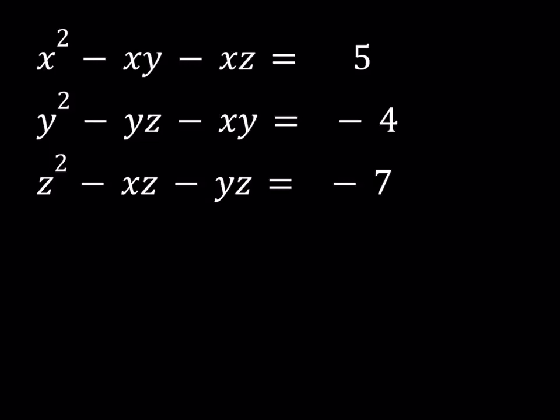Hello everyone. In this video we're going to be solving a system of equations. We have x squared minus xy minus xz equals 5, y squared minus yz minus xy equals negative 4, and z squared minus xz minus yz equals negative 7. We're going to be looking for xyz values, real or complex.